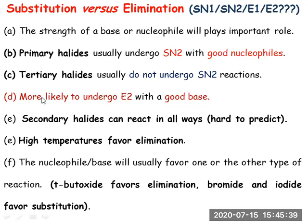Tertiary alkyl halides, in the presence of a good base, may undergo E2 elimination. For secondary alkyl halides, it is difficult to predict the outcome because all factors — nature of the leaving group, nature of the nucleophile, type of solvent, and the groups attached — together decide whether the reaction proceeds via elimination or substitution.